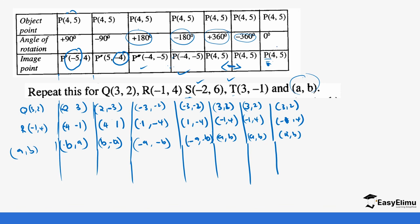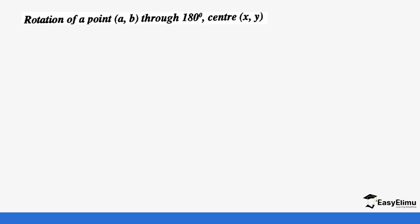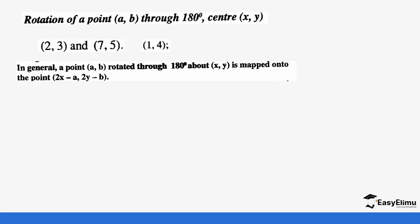When rotating through 180° and the center of rotation is not the origin, you need extra calculation. For example, given points (2, 3) and (7, 5) to be rotated through 180° about the center (1, 4). There is a formula for this: a general point (A, B) rotated through 180° about center (X, Y) maps to (2X − A, 2Y − B).